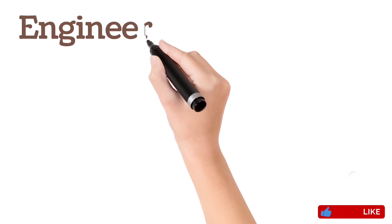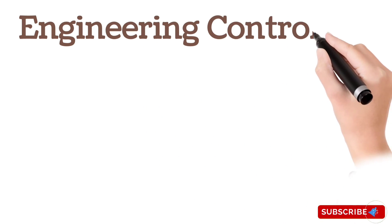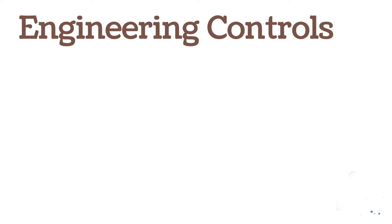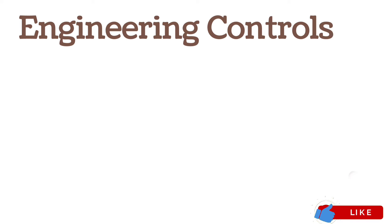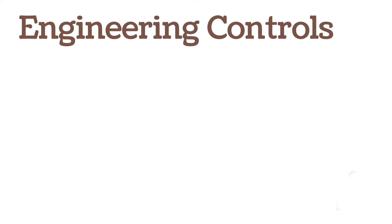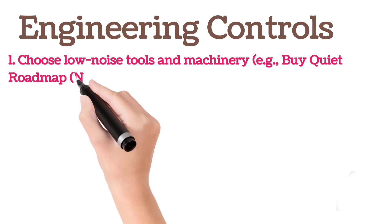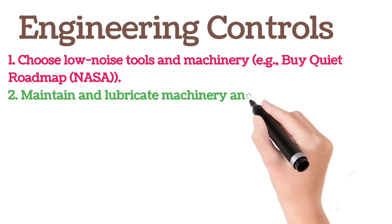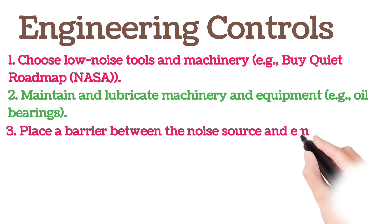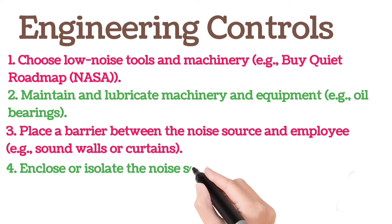Engineering controls that reduce sound exposure levels are available and technologically feasible for most noise sources. Engineering controls involve modifying or replacing equipment or making related physical changes at the noise source or along the transmission path to reduce the noise level at the worker. Examples include: choose low-noise tools and machinery, maintain and lubricate machinery and equipment, place a barrier between the noise source and employee, and close or isolate the noise source.